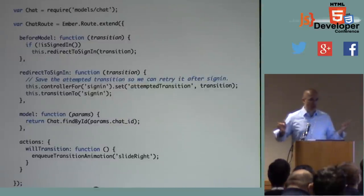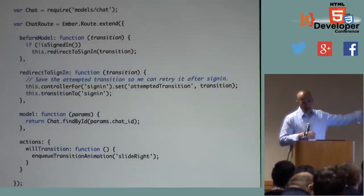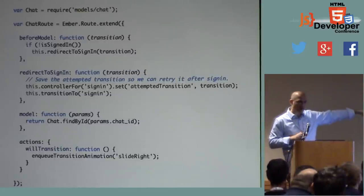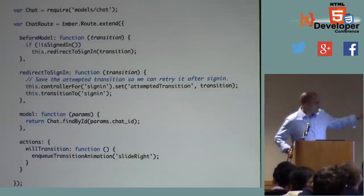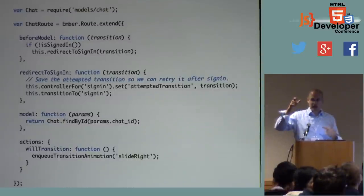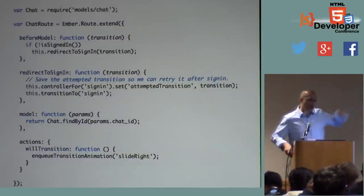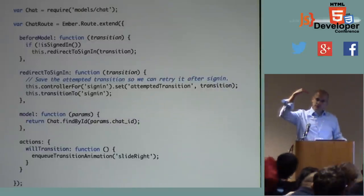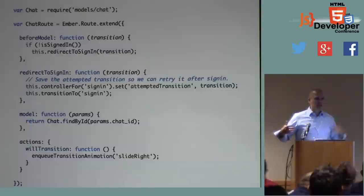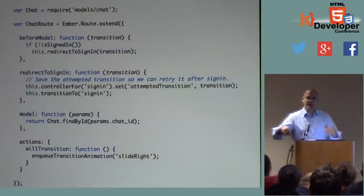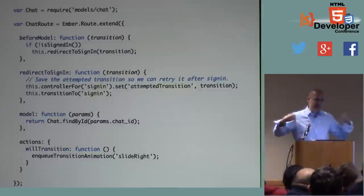The cool thing about before model is it gets a transition argument. I pass it to my redirect to sign-in method — it's an object I can use to rerun the transition the user was trying to make when we redirected them. So if you were trying to view a specific chat but weren't logged in, it sends you to the login page; you log in, and as soon as you do, it takes you back to that conversation. That's a great experience — it's thinking about our flows.